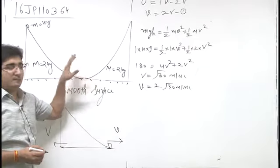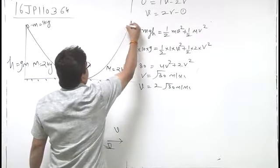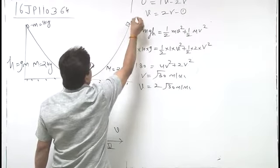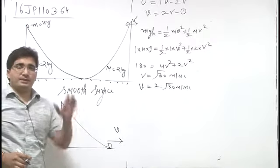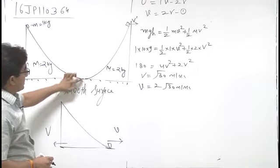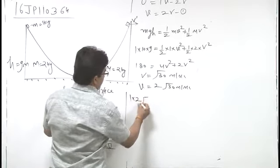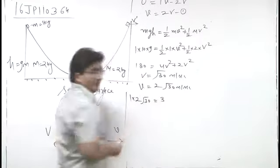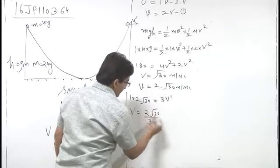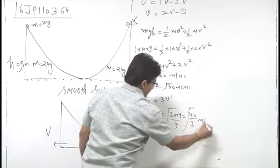The block moves forward and exerts a force on the right wedge. When it reaches the highest point, its vertical velocity becomes 0 and both the wedge and block move with the same velocity along the x axis. Applying momentum conservation: 1·2√30 = (1 + 2)·V_common. Solving gives V_common = 2√30/3 = 40/3 m/s. This is the final common velocity of the block and wedge.